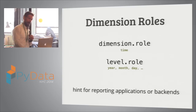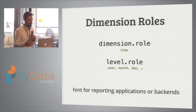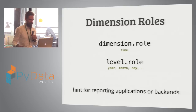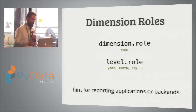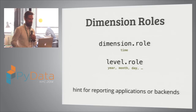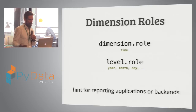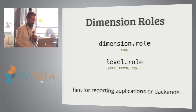More frontend and backend metadata are dimension roles. You can specify what role a dimension has. Currently there is only one role — time — and you specify the level: year, month, day, or week. Frontends can then display the most appropriate user interface for that dimension, and backends can also work with that property in a special way if they know how to deal with it.